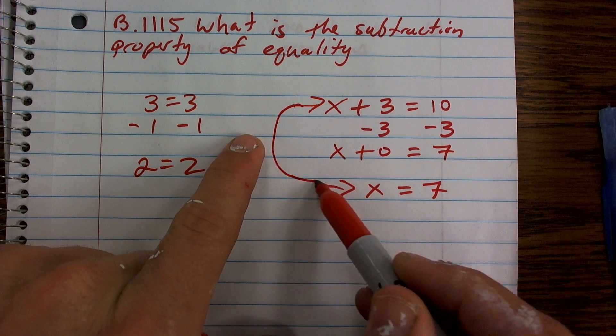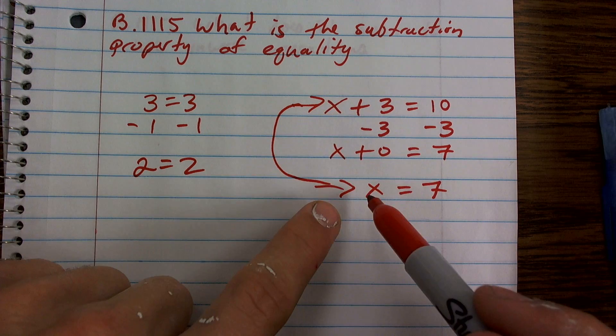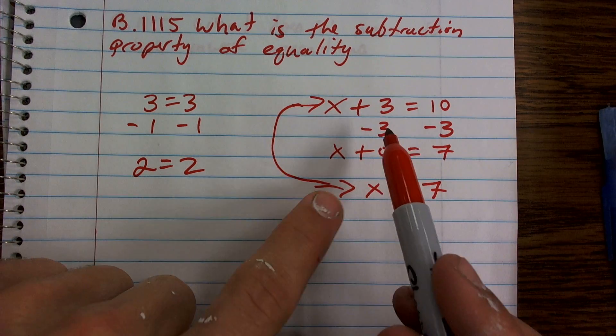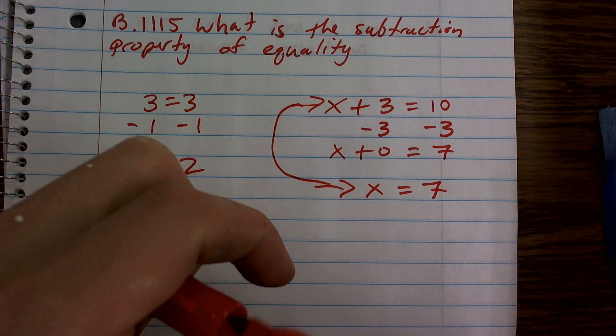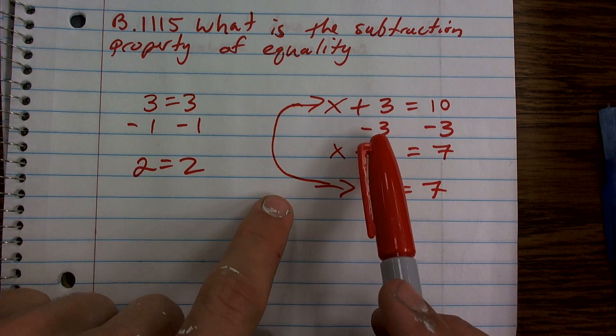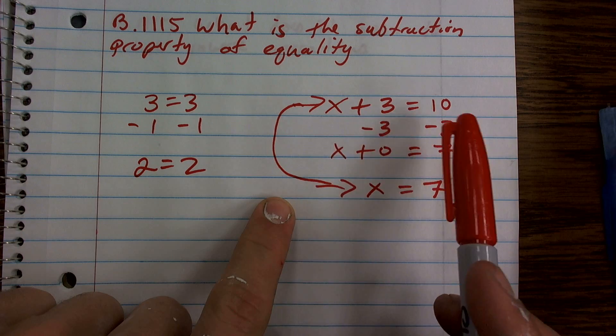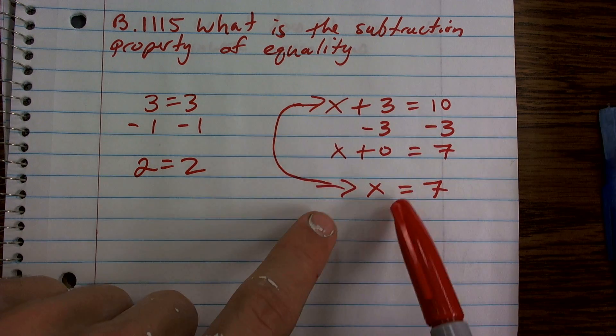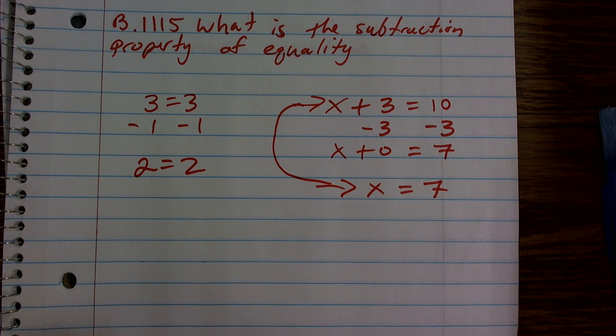The value of this also is equal to 7. So you can see since these are equivalent equations and I subtracted on both sides, I produced equivalent equations. The subtraction property of equality just states that whenever you subtract a number on both sides, you produce equivalent equations, which is very helpful.